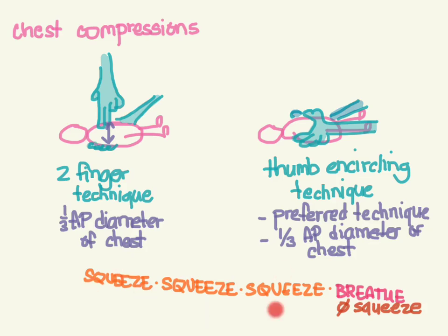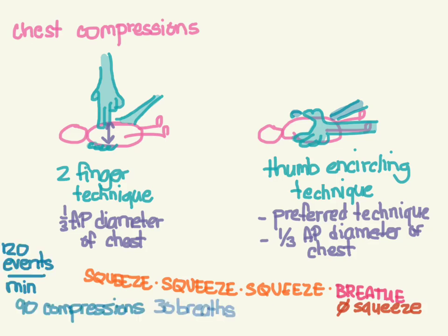The goal is about 120 events per minute — each compression and each breath counts as one event. You'll end up doing approximately 90 compressions and 30 breaths per minute. Continue this coordinated compressions-and-ventilations cycle until the spontaneous heart rate is greater than 60.